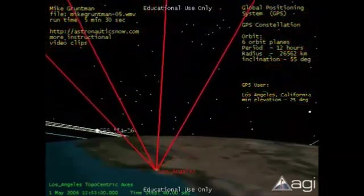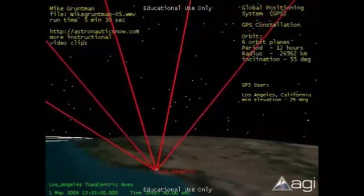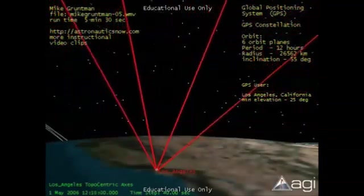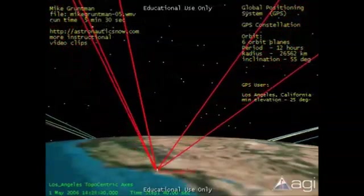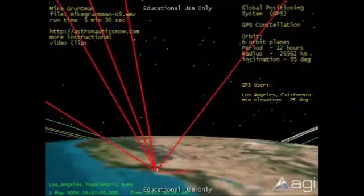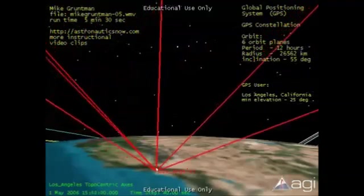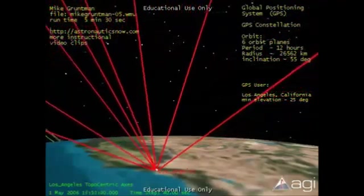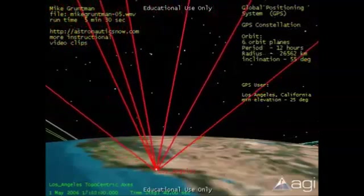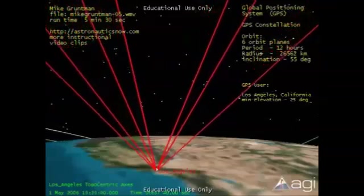A view from a user at Los Angeles offers a different perspective on accessibility to signals from GPS satellites. One can see the stars moving in the sky as the Earth rotates about its axis. Solar illumination also changes during the day. The red lines again show the directions to satellites in direct view.